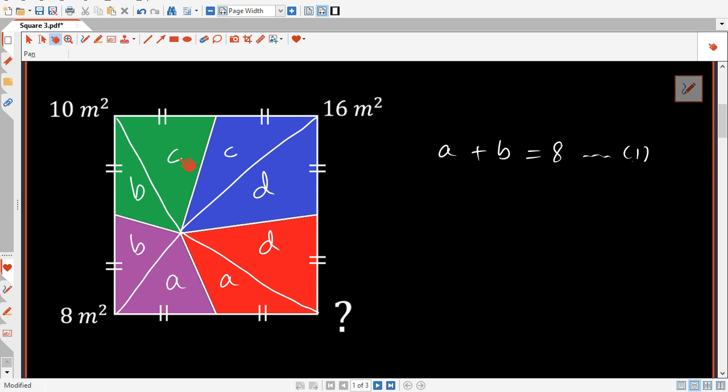And the green region here, b plus c is going to be equal to 10, and that will give us the second equation. So b plus c is going to be equal to 10. And c plus d here is going to be equal to 16, and that will give us the third equation. So c plus d is going to be equal to 16.